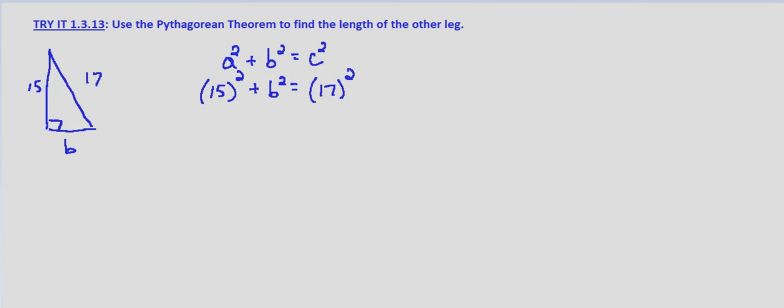And if we simplify that, 15 squared is 225. We still have b squared, and then 17 squared is 289. So we want b isolated by itself, so we subtract 225 from both sides.